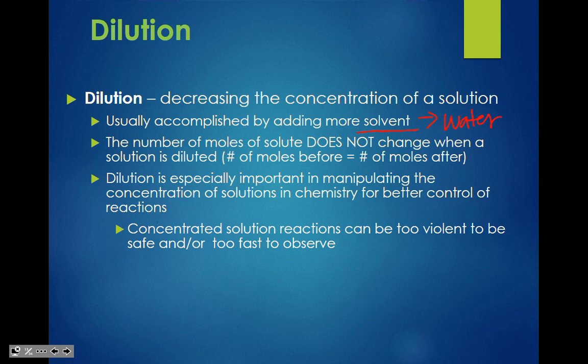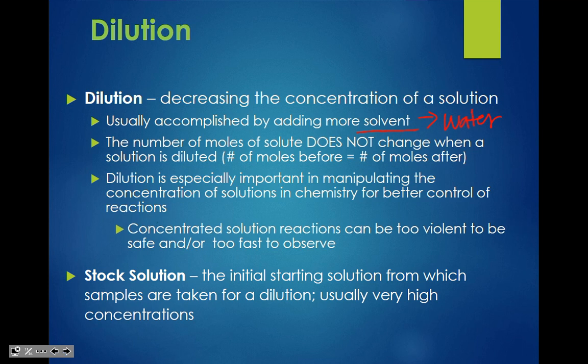Dilution is especially important in manipulating the concentration of solutions in chemistry for better control of reactions, because sometimes you want something that's not so concentrated. Concentrated solution reactions can be too violent to be safe and too fast to observe. A stock solution is the initial starting solution from which samples are taken for a dilution — usually at very high concentrations. So you take a piece of that concentrated solution, add water to it, dilute it, and use that for your experiment.